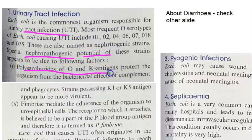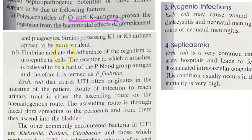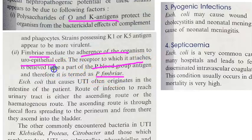They have polysaccharide O and K antigens. They also have fimbriae — the small projections you can see in the diagram, distinct from the flagella — which help in adhesion of the organism to uroepithelial cells. P fimbriae are particularly important; the receptor to which they attach is believed to be part of the P blood group antigen, hence the name P fimbriae.